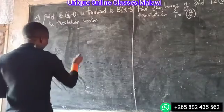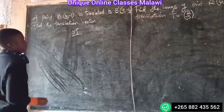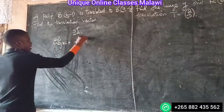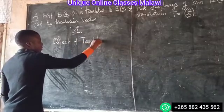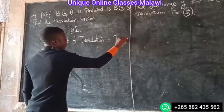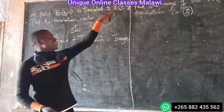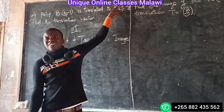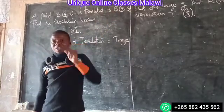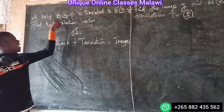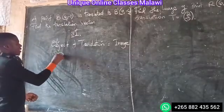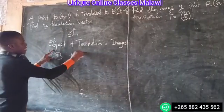Remember that? So the translation is in the formula, general formula. Its object plus a translation vector equals the image. So it's like B as object, translationally, gives the image.